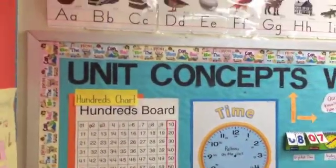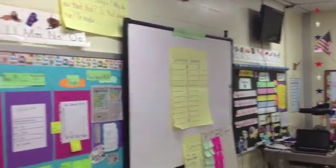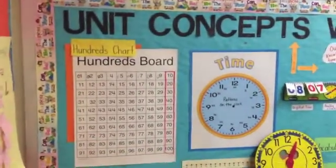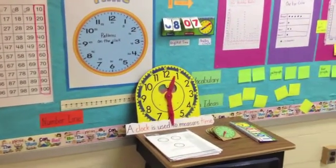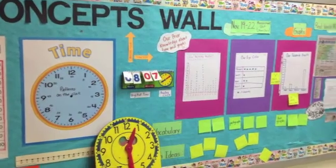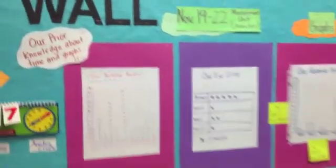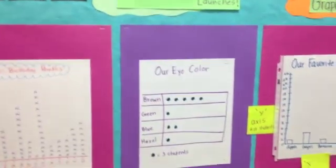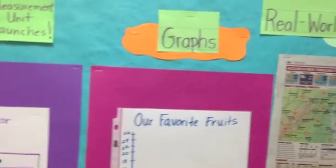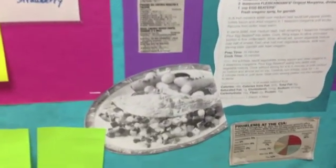This makes the word wall a central support of vocabulary use, meaning, and application. The unit concepts wall is an ever-changing bulletin board posted at the front of my classroom, which I use to support students' learning by providing anchor charts, support materials, and relevant vocabulary words for our current unit of study. I also make sure to show examples of how the current unit of study is real-world applicable.